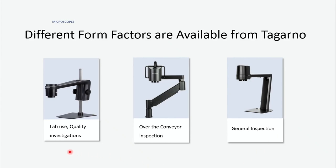We saw a picture of this particular microscope on the first screen with its adjustable height stand — it really allows us to make use of a variety of different lens and lighting options, going from a macro lens up to in the range of 500 or 600X on magnification. So this system is mostly used in the lab or for quality investigations.